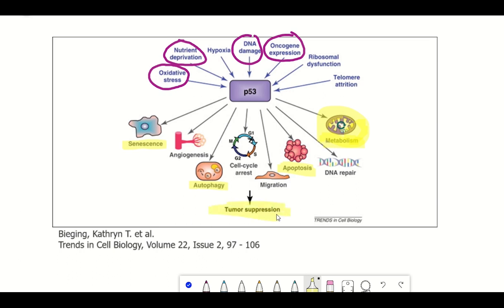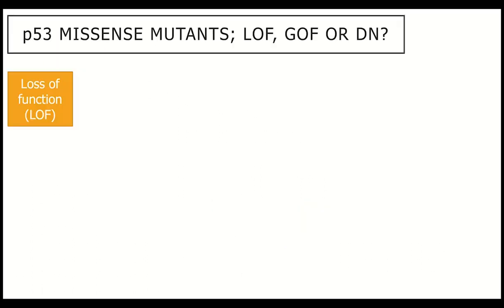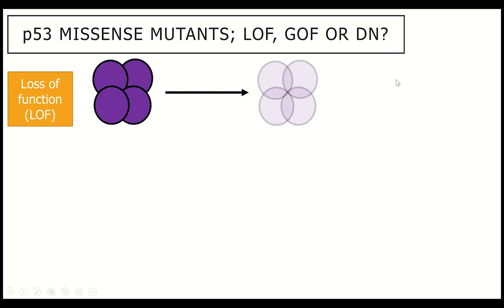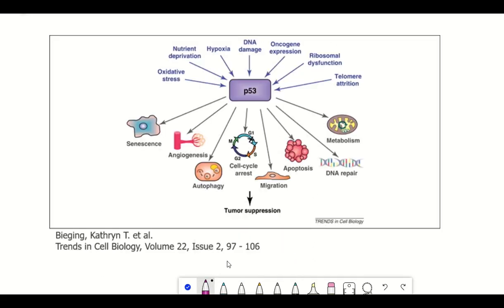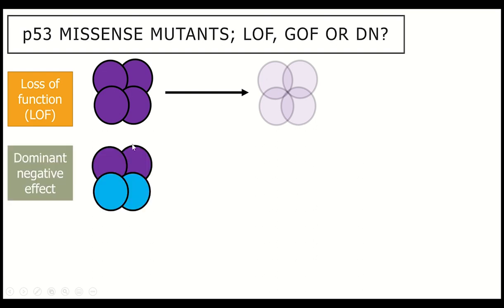So what happens when p53 gets mutated? Well, a lot of these mutations only change one amino acid within the protein, so the structure pretty much remains intact, but it has three potentially different consequences. The first is referred to as loss of function, whereby the mutated p53 protein fails to activate the target genes of the wild type — the normally functional p53 — that are critical for the control of homeostasis.